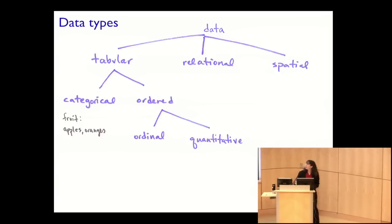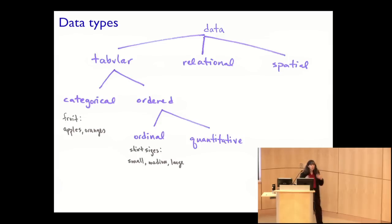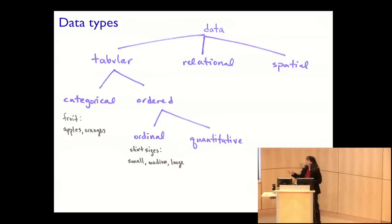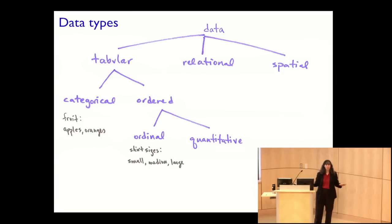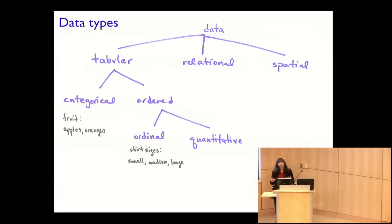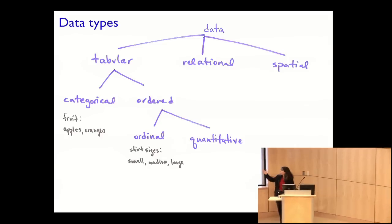Once we have ordered data, we can distinguish further. With ordinal data, all we have is ordering — t-shirt sizes are a great example: small, medium, and large. Everyone knows medium is in between small and large, but we don't ask 'what is a large t-shirt minus a small t-shirt?' — that's undefined. There is order, but you can't do full arithmetic with ordinal data. The data type where you can is quantitative data — numerical data where you can do full arithmetic, like asking what is 23 inches minus 17 inches.